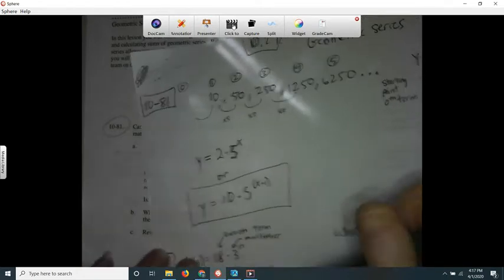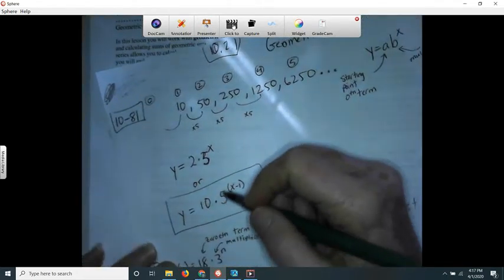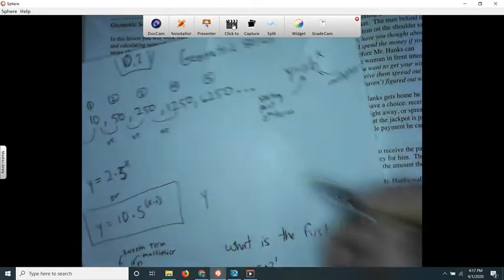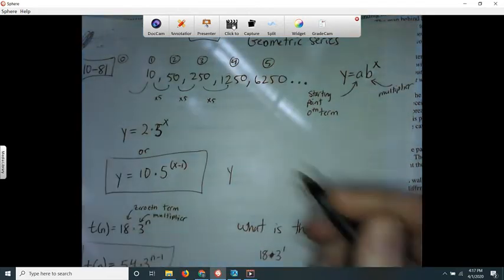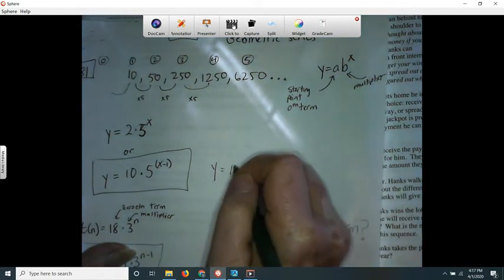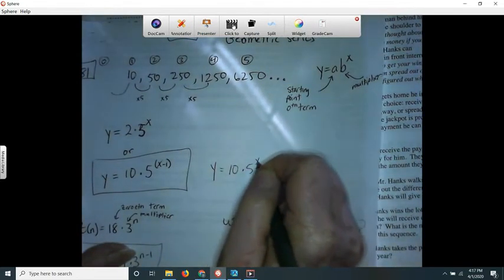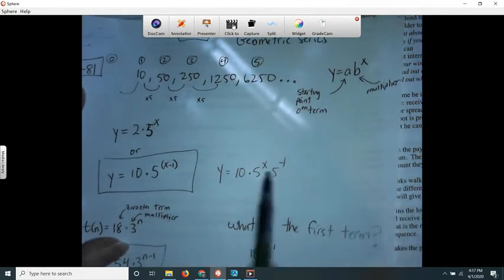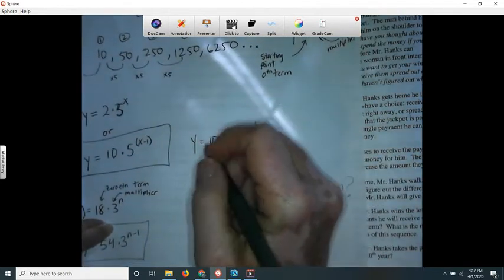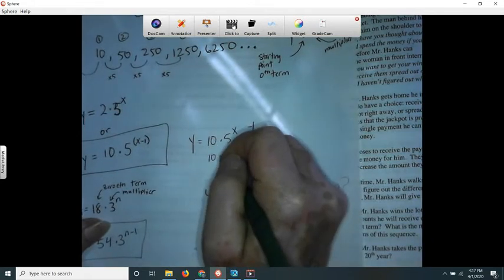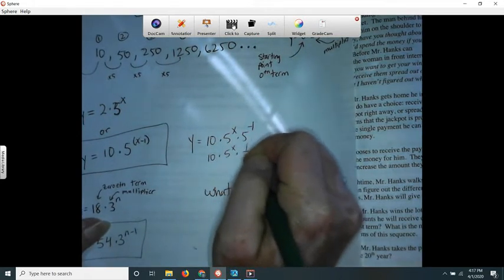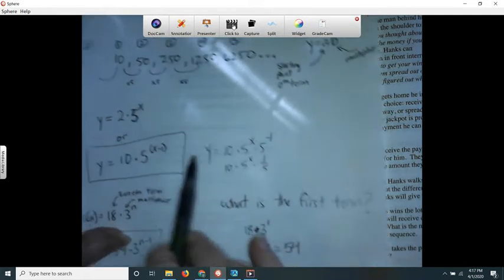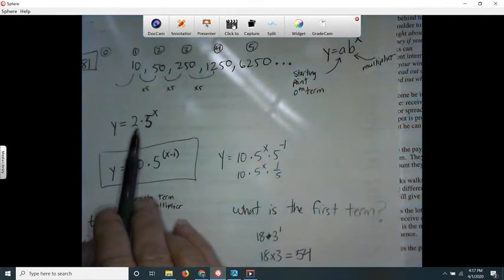How can I show that these are the same? Well this is 5 to the x. If I want to I can go, this is 10 times 5 to the x times 5 to the negative 1. I can pull this apart. Well 5 to the negative 1 is 1 over 5. This is 10 times 5 to the x times 1 over 5. 1 over 5 times 10 equals 2 times 5 to the x. So you can see that these are equivalent.